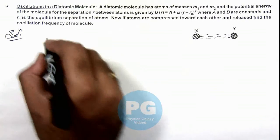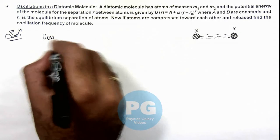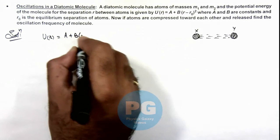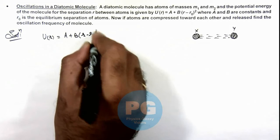The potential energy of bond as a function of r is given as A plus B times (r minus r₀) whole square.